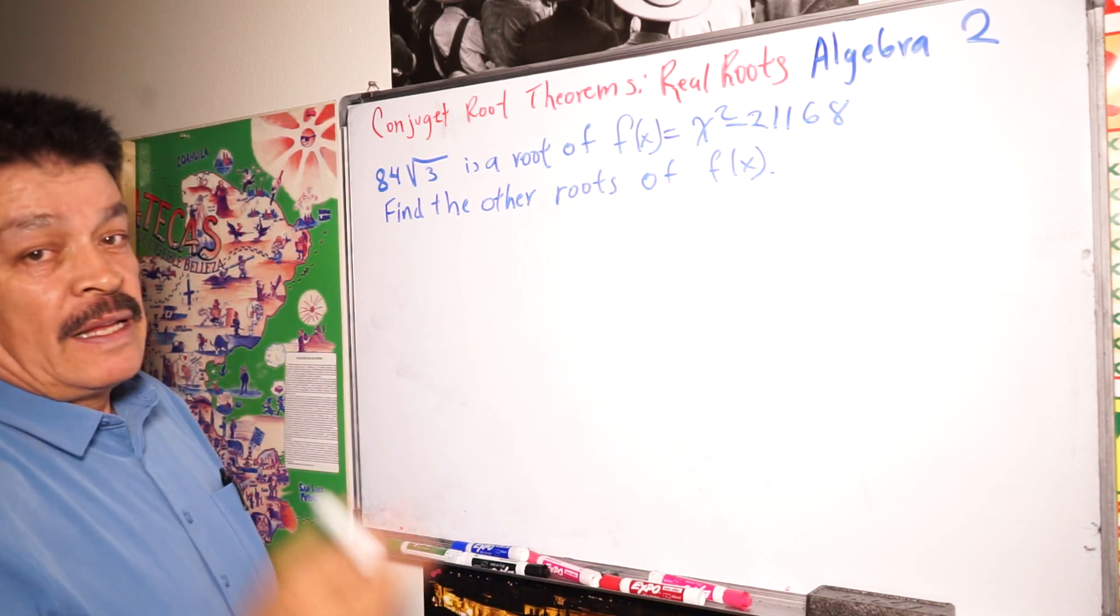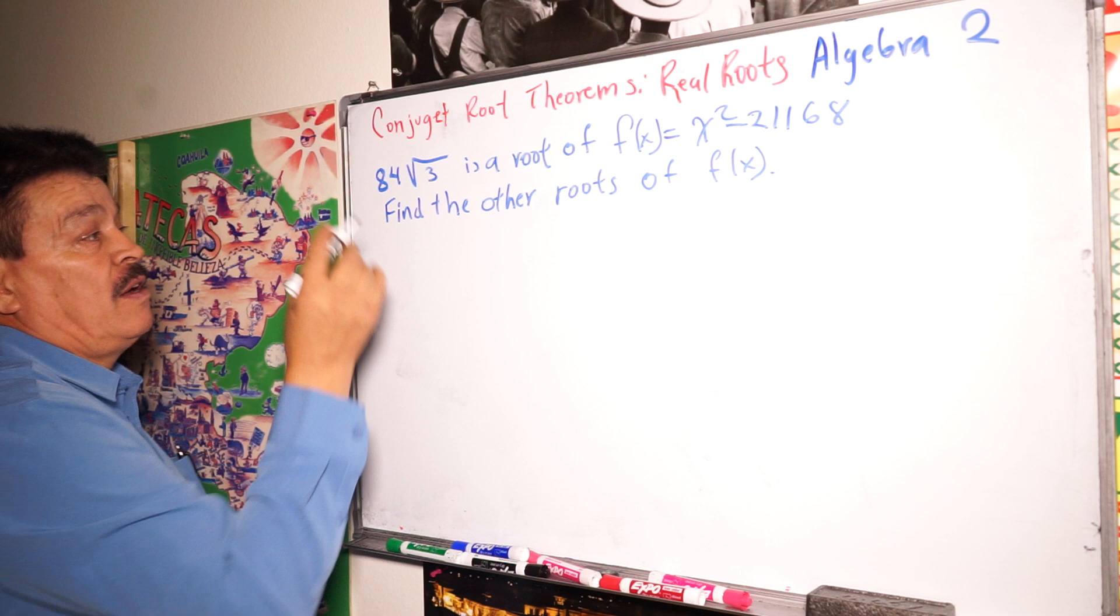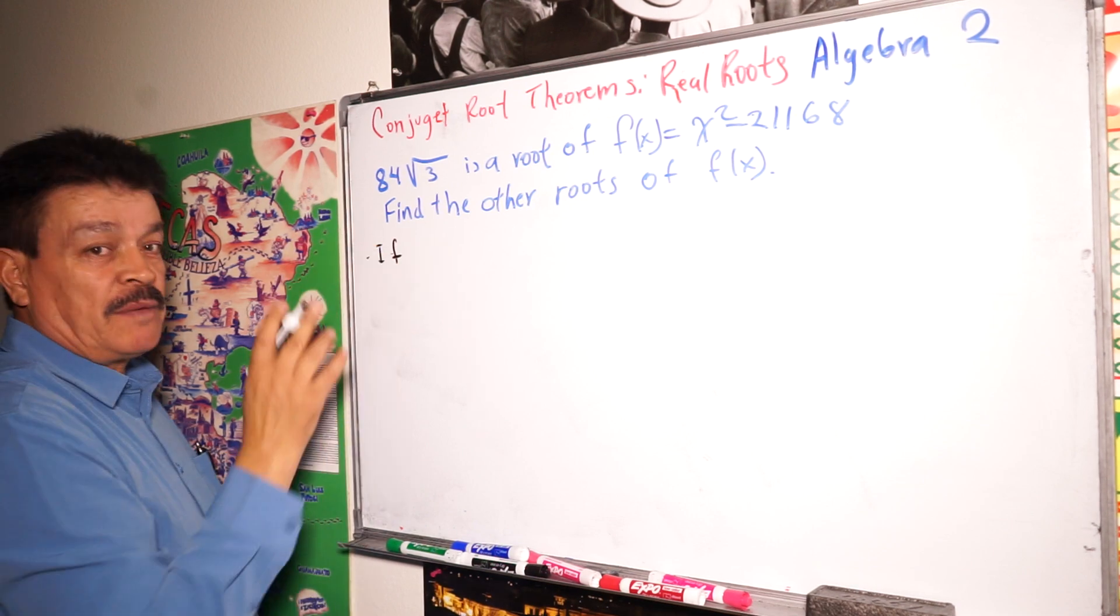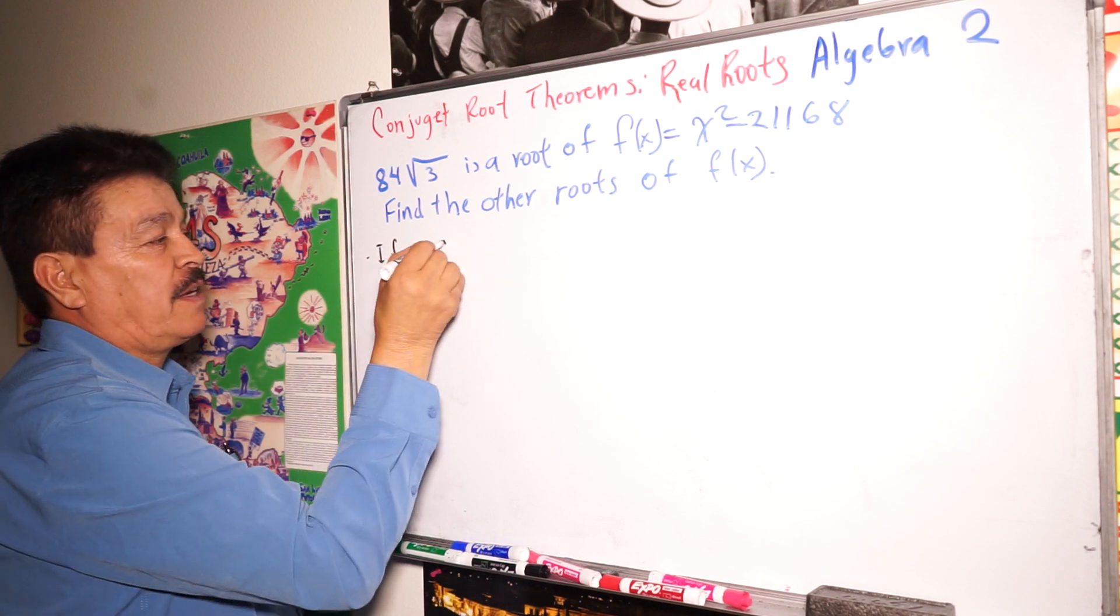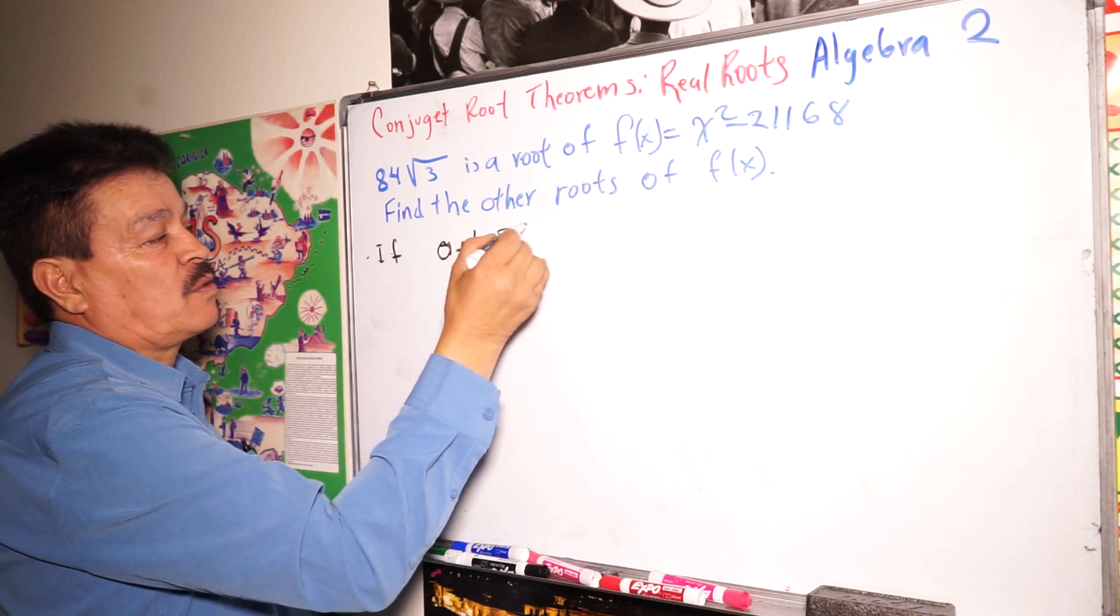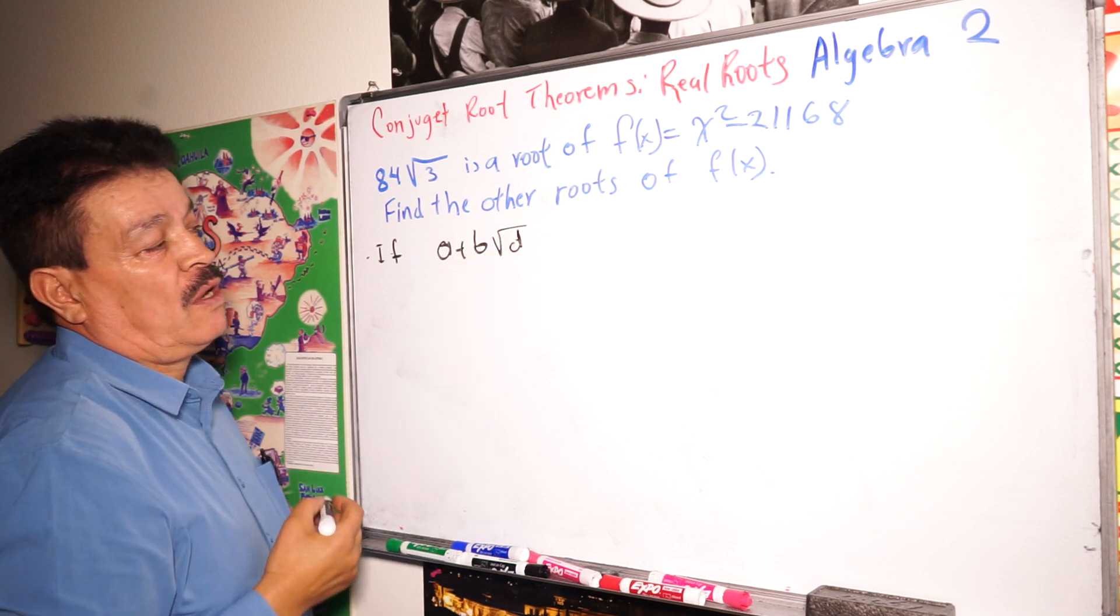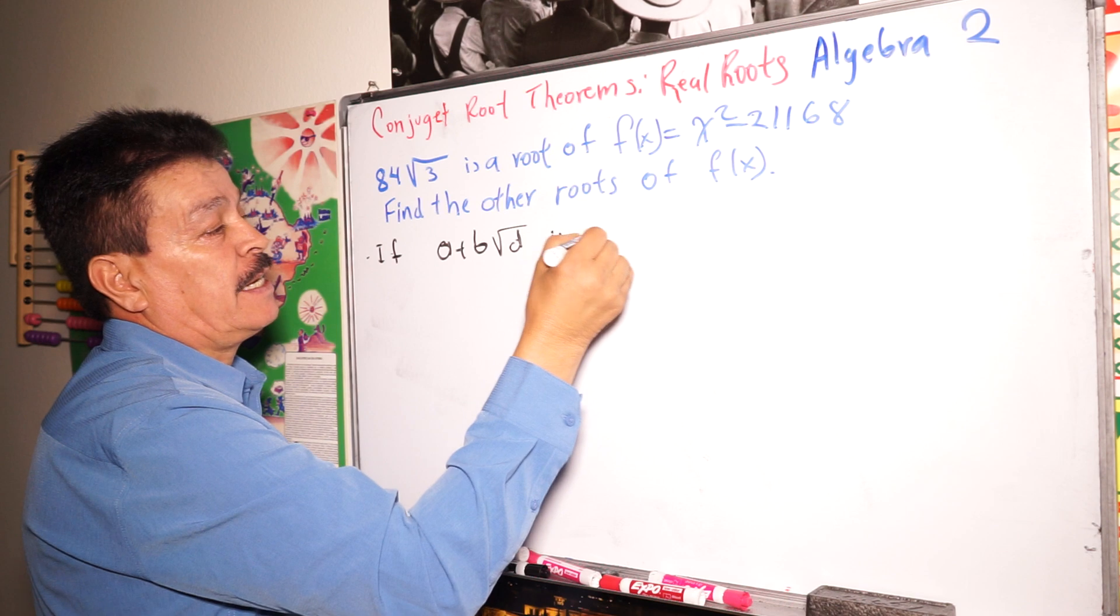Before, let's remember this. It's very important to keep in your mind this little concept. If a plus b times square root of d is a real number, it's a real number.